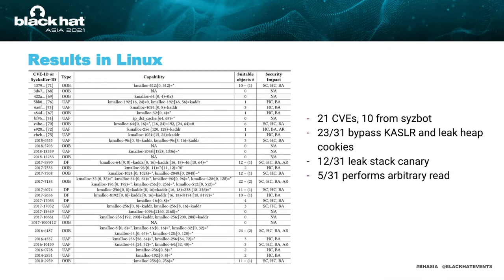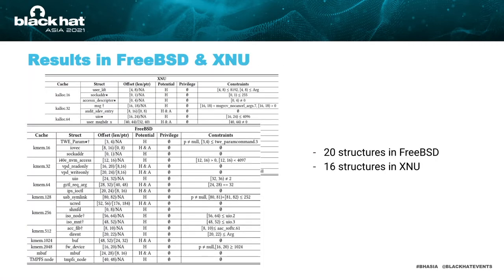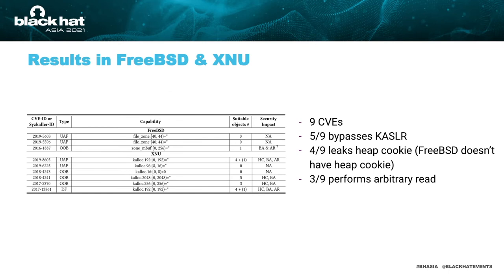We used 31 vulnerabilities to examine what we can do using elastic objects. Results showed that 23 vulnerabilities enabled KASLR bypassing and heap cookie leaking, 12 of them can leak stack canary, and 5 of them can perform arbitrary read. We therefore conclude that elastic object attack is general in the Linux kernel. For other operating system kernels: in XNU, the static analysis tracks down 16 structures; in FreeBSD, 12 structures. Using 9 CVEs in FreeBSD and XNU, 5 can bypass KASLR, 4 leak heap cookies (since FreeBSD doesn't have heap cookies), and 3 can perform arbitrary read. The elastic object attack is an issue not only in Linux, but also in FreeBSD and XNU.